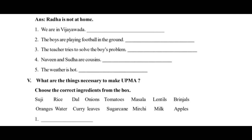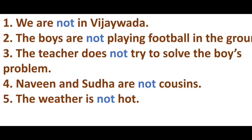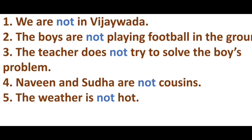Fourth one: 'Naveen and Sudha are cousins.' Negative: Naveen and Sudha are not cousins. Fifth one: 'The weather is hot.' Negative: The weather is not hot. Answers: First: We are not in Vijayawada. Second: The boys are not playing football in the ground. Third: The teacher does not try to solve the boys' problem. Fourth: Naveen and Sudha are not cousins. Fifth: The weather is not hot.